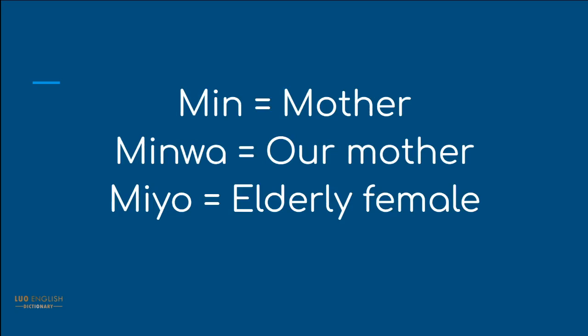Min. Min is if you want to talk about someone's mother — 'Min gi' means their mother. Min is used for a mother. 'Min wa' means our mother. Mio is a female who is elderly and of child-bearing age. A female who is of child-bearing age is Mio.